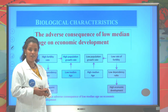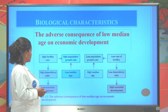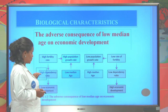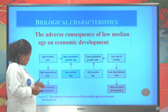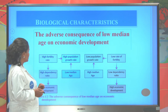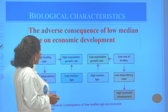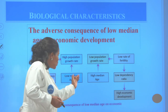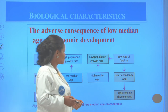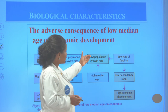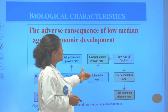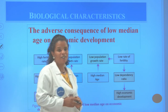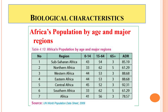Let us see this chart. If an area has a high fertility rate, it has a high dependency ratio and low economic development. If an area also has a high fertility rate, the population growth rate is very high, dominated by a low median age. An area with a low population growth rate has a high median age, low fertility rate, low dependency ratio, but high economic development.